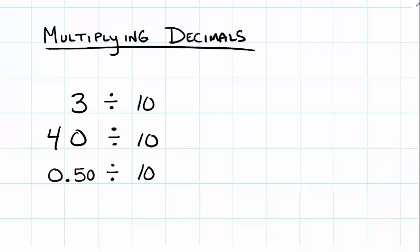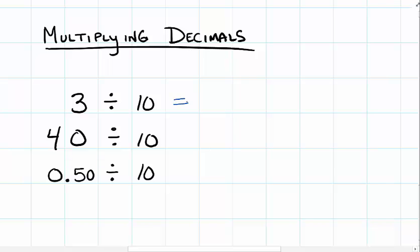You're probably thinking, why are we talking about division when we're going to multiply decimals? Well, let me show you. For each of these, you should know what the answer will be. 3 divided by 10 means we move the place value in the number 3 one place to the left. In the number 3, the decimal starts just after it, and dividing by 10 moves it one place to the left. The answer is 0.3.